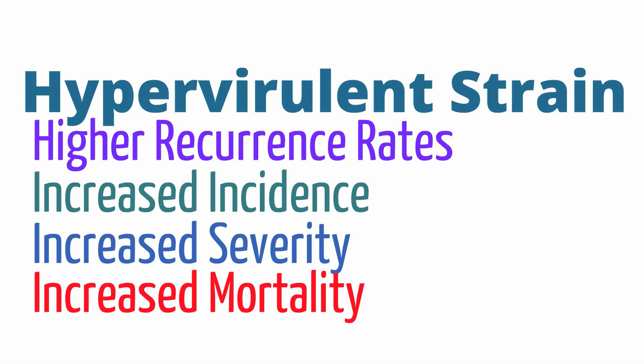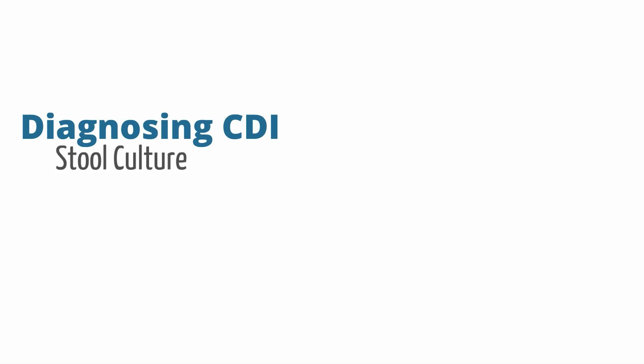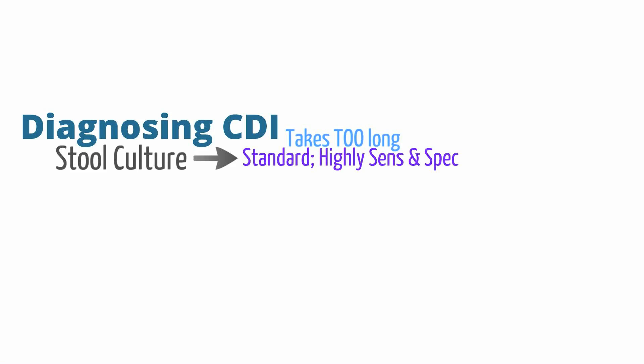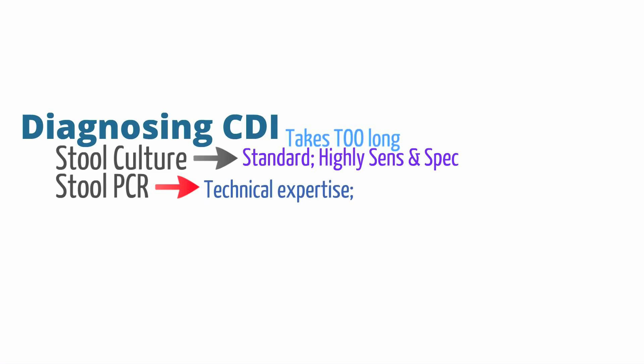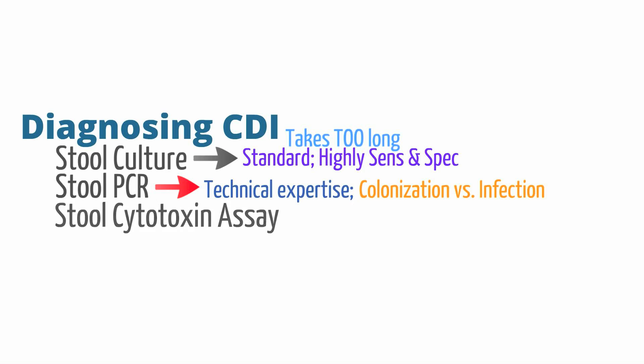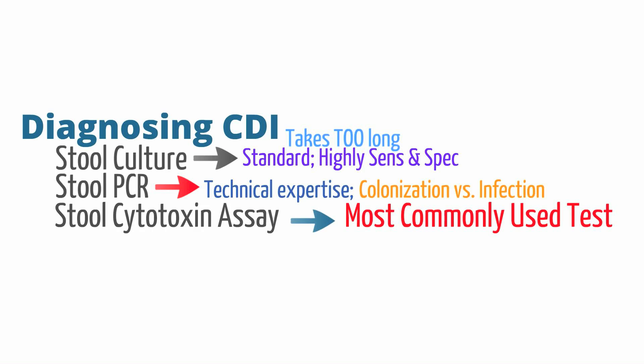There are multiple tests that can be used. The first we will talk about is a stool culture. Stool cultures are the standard for diagnosis of C. diff because they have high specificity and sensitivity, but these cultures take too long to be clinically useful. In addition, we could obtain a PCR for C. diff toxin. This requires a lab with specially trained techs, but more importantly, we cannot differentiate between colonization from actual active infection, making this test less clinically useful.